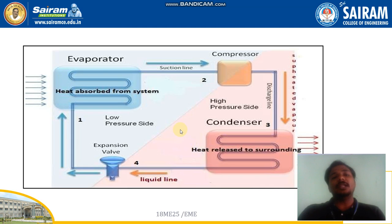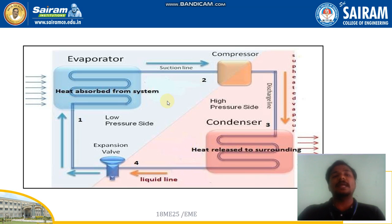From the evaporator, the same process keeps repeating continuously. This cycle continues until the refrigerator reaches its set maximum temperature. Once that set temperature is reached, the compressor automatically stops working, and consequently the condenser also stops, because the required temperature has been maintained. When the refrigerator is opened again, hot outside air enters, or if new items are placed inside, the compressor starts working again to absorb the heat and repeat the same process.